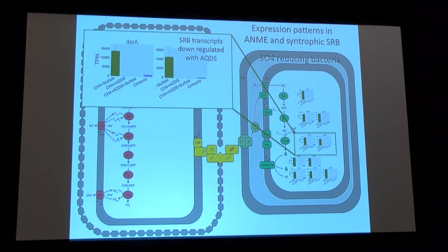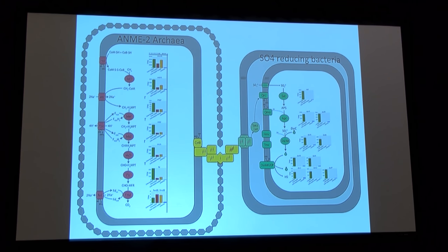In support of the idea that sulfate-reducing bacterial groups were shut down in the presence of AQDS, we see this also at the transcriptional level — looking at DSRA, with methane and sulfate versus AQDS with or without sulfate versus methane only, we do a pretty good job of shutting off the sulfate-reducing partner across all key energetic genes involved in sulfate reduction. Comparing to the archaea side, we find expression across all main genes in the methanogenic or methanotrophic pathway under conditions with sulfate and also with AQDS, supporting our nanoSIMS data in terms of activity levels.